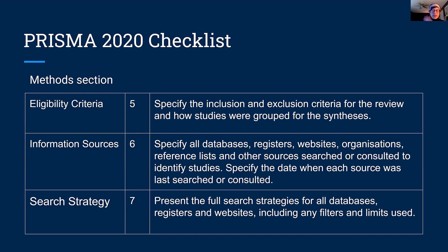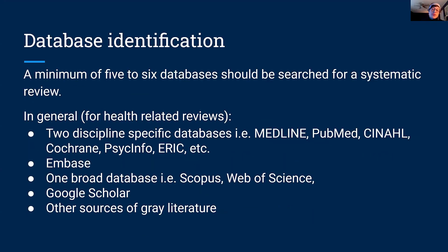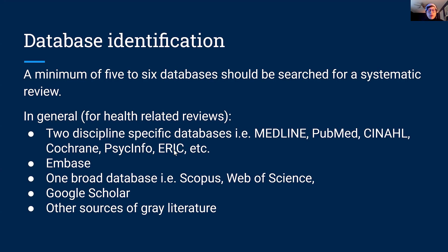For information sources, in a systematic review you don't want to search just one or two databases. You are trying to eliminate bias by searching as widely as you can. For health-related reviews, you usually want at least two discipline-specific databases — generally Medline, PubMed, CINAHL, Cochrane, PsychInfo, and even ERIC, which is an educational database. If you're looking at health topics related to medical education, you may want to use ERIC as well. Embase is a database that has been proven to bring in more unique content than some other databases, and it's very strongly recommended that you use Embase as one of your sources. Then choose a broad database covering multiple disciplines at once, like Scopus or Web of Science.